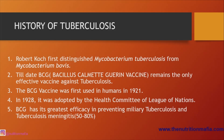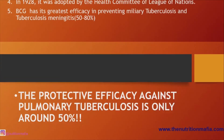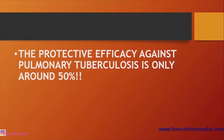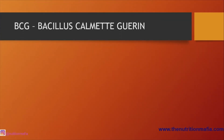You might be thinking: as children are born, BCG is immediately given to everyone — then how come there are so many tuberculosis patients around the world? The answer is that BCG has its greatest efficacy in preventing miliary tuberculosis and tuberculosis meningitis, up to 50 to 80 percent, while the protective efficacy against pulmonary tuberculosis is only around 50 percent.